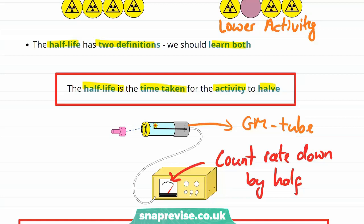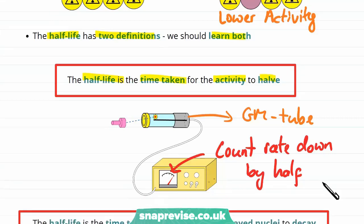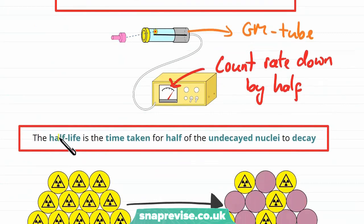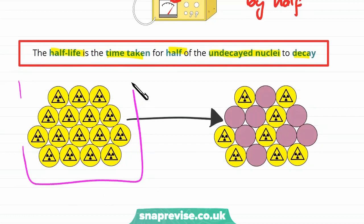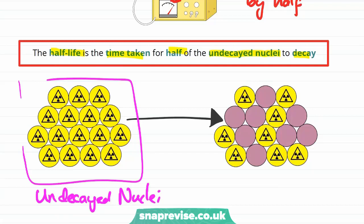The half-life is the time taken for half of the undecayed nuclei to decay. So let's imagine I start off with these as all of my undecayed nuclei. And the half-life is the time taken for half of those to actually end up decaying. And notice that the two definitions are the same thing. When half the nuclei have decayed we now have half as many radioactive atoms as we had before. So our sample is going to have half the activity that it had before.